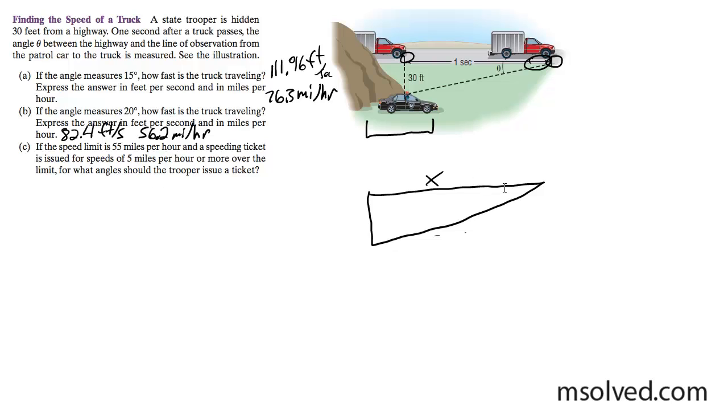We've got a mysterious theta here, so we have 30 feet still. We want to find out what angles the trooper should issue a ticket. So 55 miles per hour is the speed limit. Speeding tickets are issued 5 miles and over, so 60 miles an hour is what we're looking for here. We need to convert this back into feet per second so we have something to manage here.